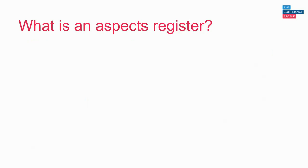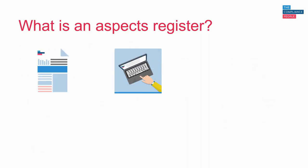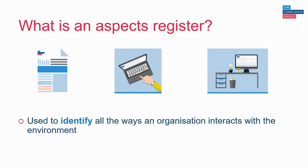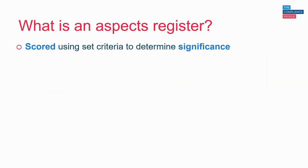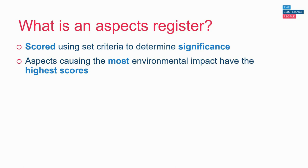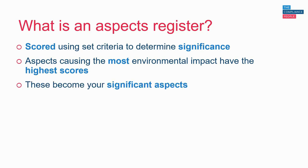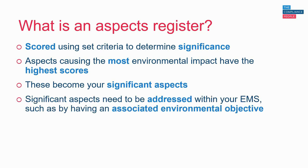So let's start by covering what an aspects register actually is. An aspects register is a document, tool or system that's used to identify all the ways an organisation interacts with the environment. Once we've identified all of our aspects, they are then scored using set criteria in order to determine significance. Those aspects causing the most environmental impact end up with the highest scores and become our significant aspects, which then need to be addressed within our environmental management system, such as through having an associated environmental objective.